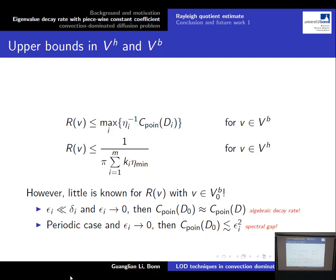V_{B,0} corresponds to the solution space of a degenerate elliptic operator with homogeneous Dirichlet boundary conditions. However, little is known on the Rayleigh quotient value of this space. The only known result is when the diameter of the inclusions is much smaller than the distance between the inclusions and the diameter tends to zero: then the Poincaré constant in the degenerate domain D_0 is almost the same as in the full domain D, giving algebraic decay rate. In the periodic case with diameter tending to zero, we can apply the Poincaré inequality to get the constant bounded by eta_i squared, giving a spectral gap.